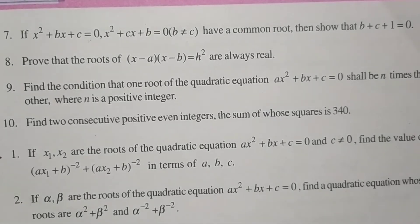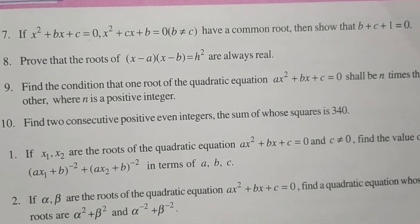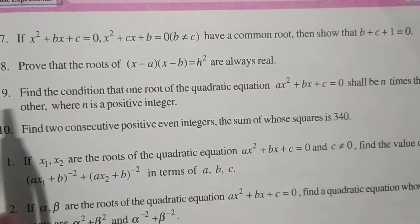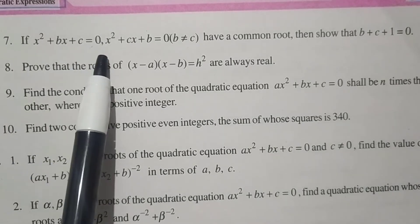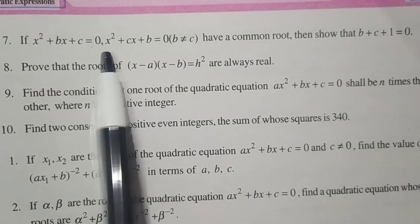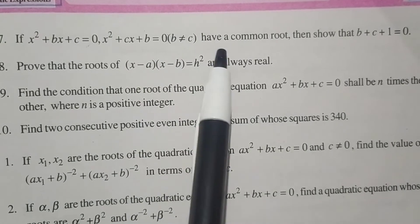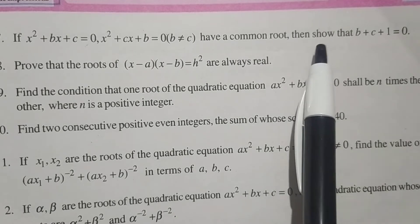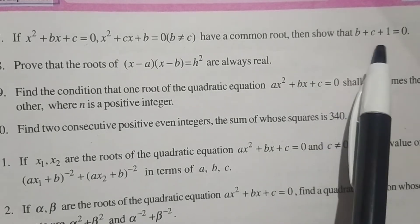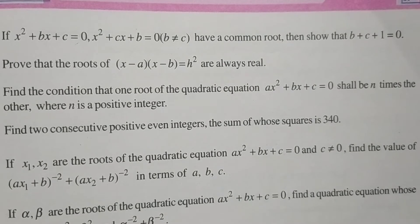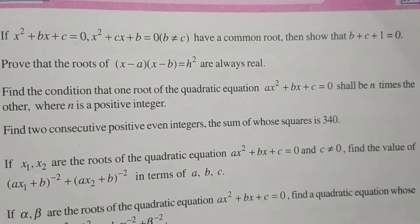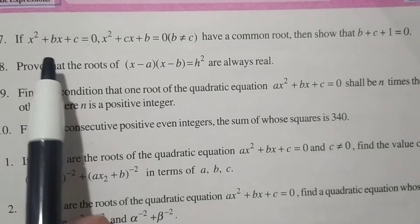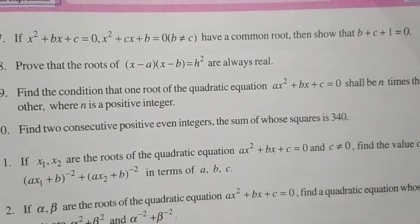Hello guys, we will continue the chapter of quadratic expressions. In this video we are going to solve question 7: if x squared plus bx plus c equals 0 and x squared plus cx plus b equals 0 have a common root, then we should show that b plus c plus 1 equals 0. Let's understand the question — these two equations have a common root.